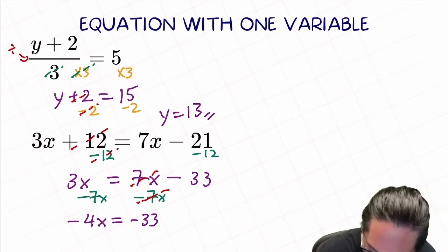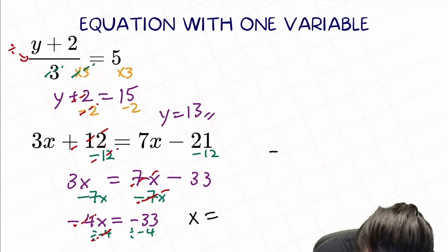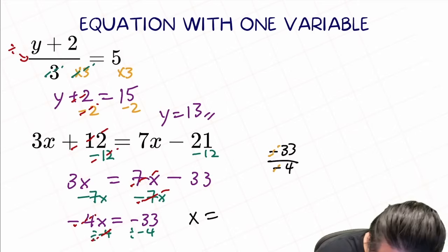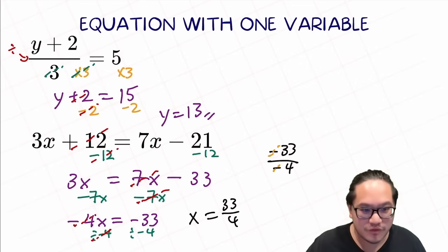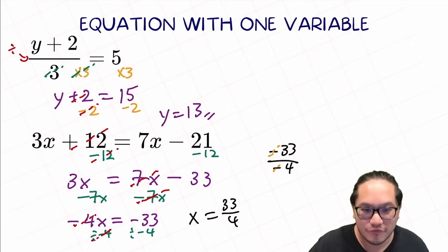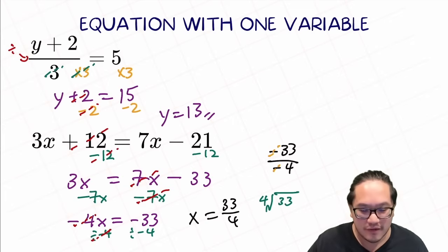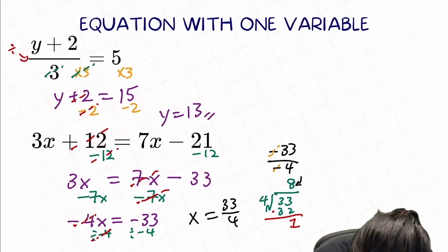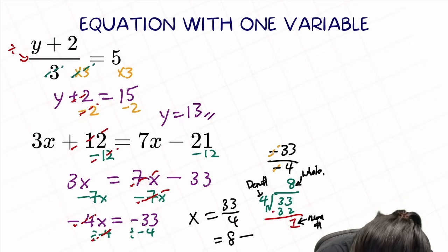Now we have negative 4x equal to negative 33. We isolate x by dividing negative 4 on both sides, so we have x by itself. On the other side, negative 33 divided by negative 4 — negative divided by negative, the negative signs cancel each other out — so we're left with 33 over 4. But that's not our final answer: we need the simplest form, which is a mixed fraction. We put 33 inside and 4 outside — 4 times 8 equals 32, subtract to get a remainder of 1. So the final answer is 8 and 1 over 4.